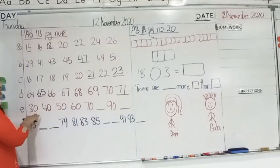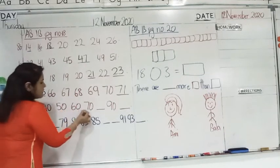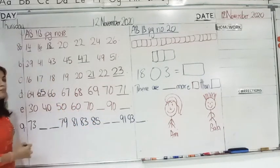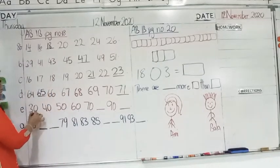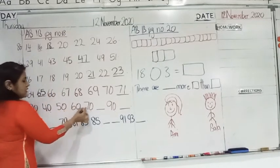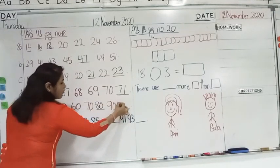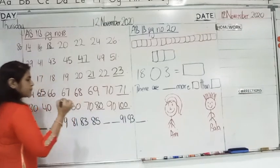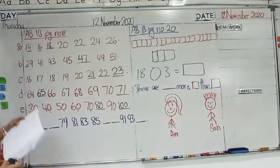Next, letter E. Now, if you notice, all the numbers are ending with 0. That means we are counting by 10s. For example, 30, 40, 50, 60, 70. Yes, 80, 90 and 100.